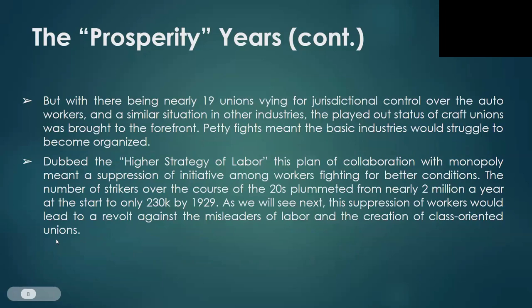This was due to the craft nature of the AFL. With nearly 19 unions vying for jurisdictional control over the auto workers and similar situations in other industries, petty fights meant that basic industries would struggle to become organized. Dubbed 'The Higher Strategy of Labor,' this plan of collaboration with monopoly meant the suppression of initiative among workers fighting for better conditions. The number of strikes over the course of the 1920s plummeted from nearly 2 million a year at the start to only 230,000 by 1929. This suppression of workers would lead to a revolt against the misleaders of labor and the creation of class-oriented unions.